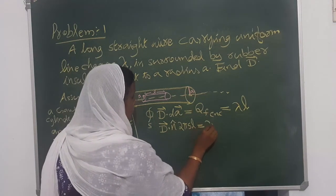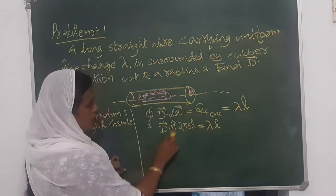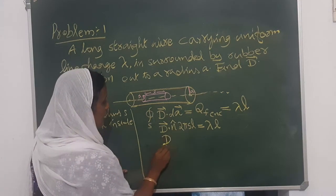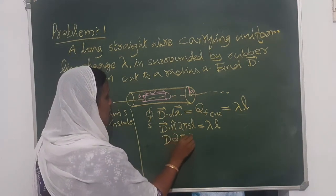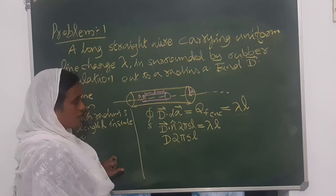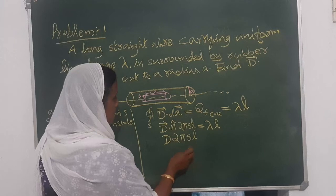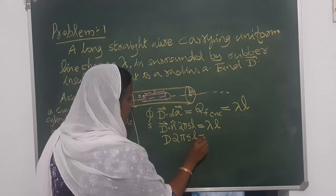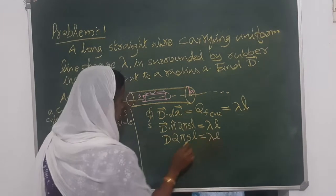So we get here this is equal to lambda L. So this gives us D times 2 pi S L is equal to lambda L.